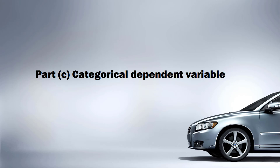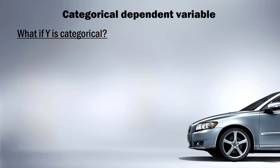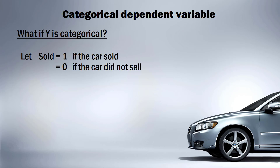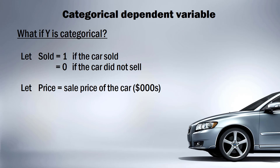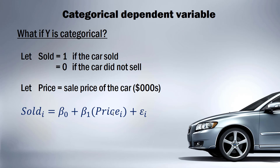We're now on part C of regression video 4, looking at categorical dependent variables — what happens if our Y variable is categorical. We're still using the same car sales data set, but here our Y variable is the sold indicator, which equals one if the car is sold and zero if it did not sell. Our X variable is the price of the car measured in thousands of dollars.